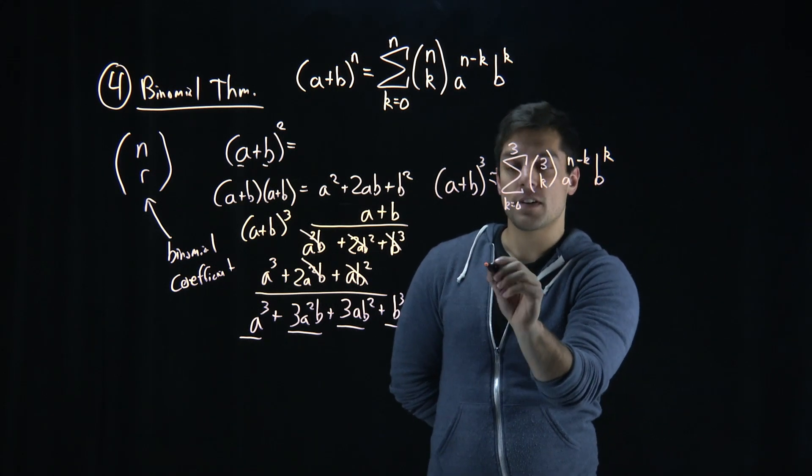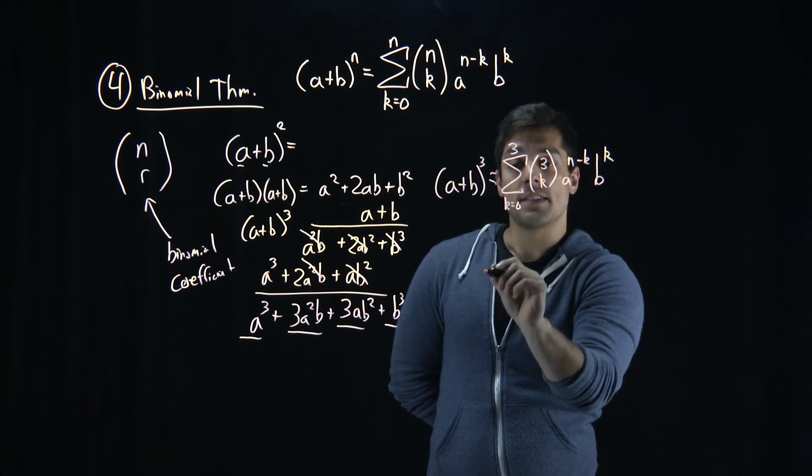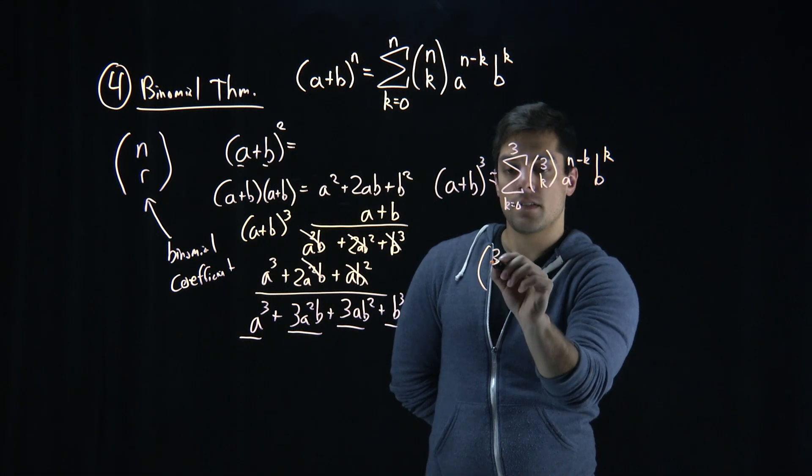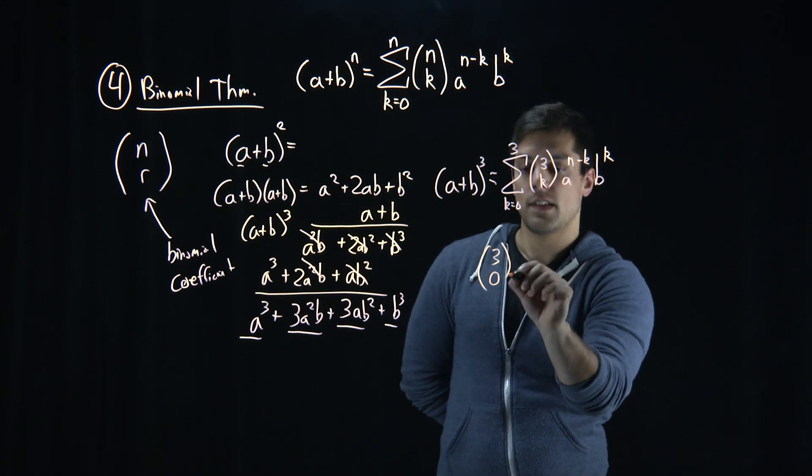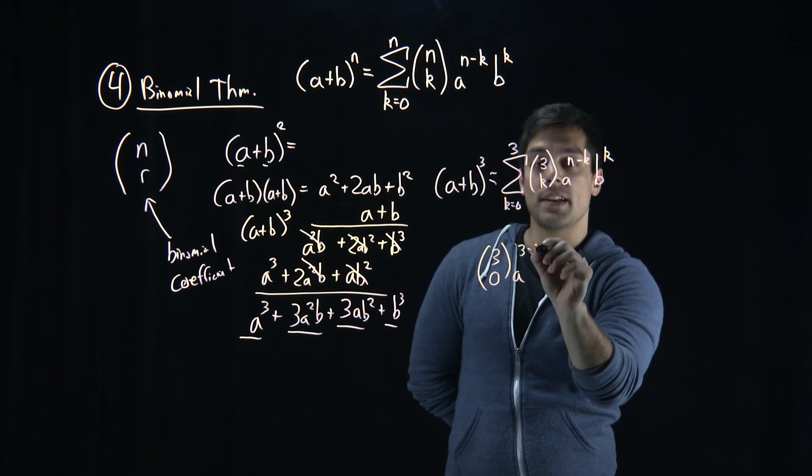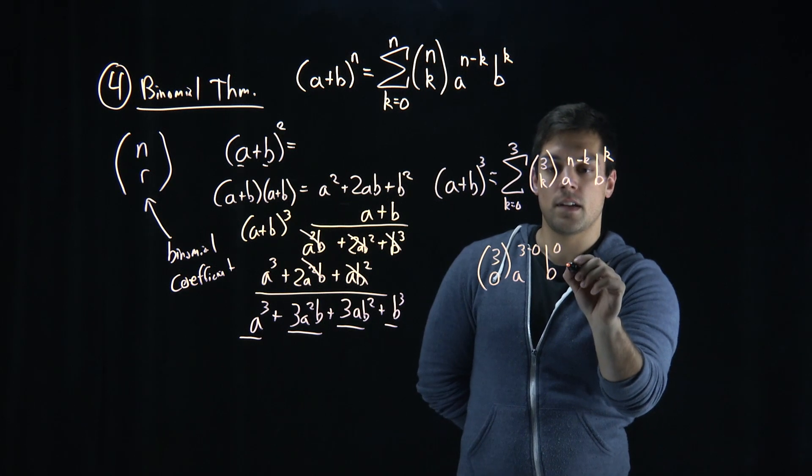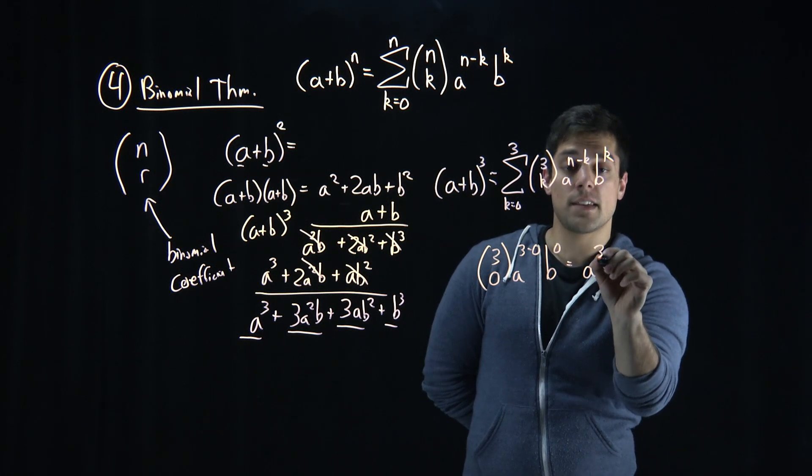Okay, so for our first term, k is equal to 0, so I'm doing 3 choose 0, a to the 3 minus 0, b to the 0. And this equals a cubed.